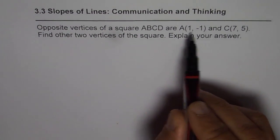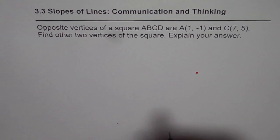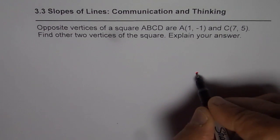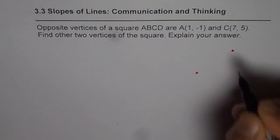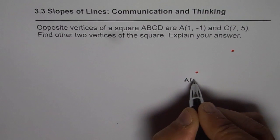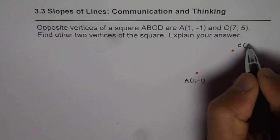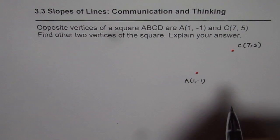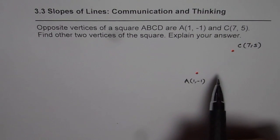Now, you can use a graph paper so that it becomes simpler for you. Let us plot these points. Let us assume this is point A for us, and then we have diagonally across point C. So, point A is at (1, -1) and C is at (7, 5). We need to draw a square.